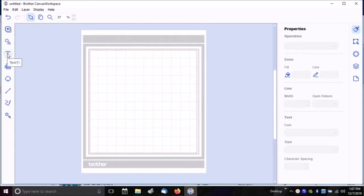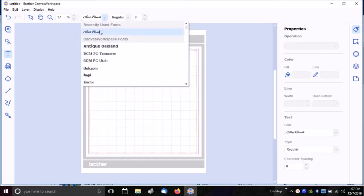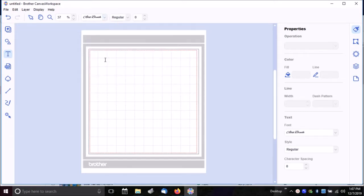I'm in my Brother Canvas workspace program now, and I'm going to go to the text. The font I'm going to choose is Alex Brush. And I'll type my sentiment.